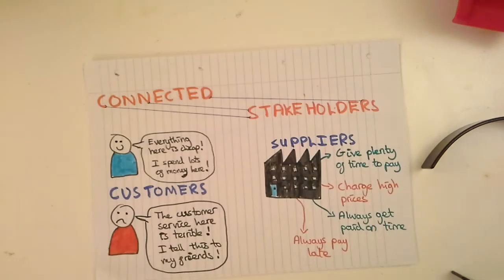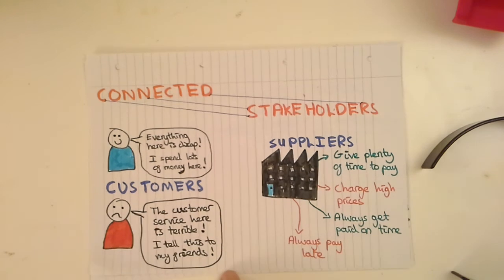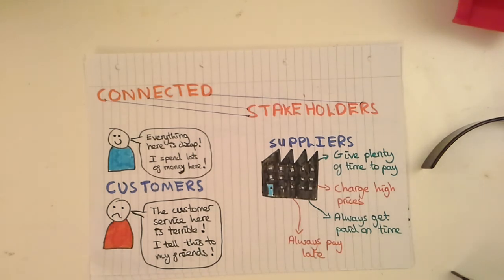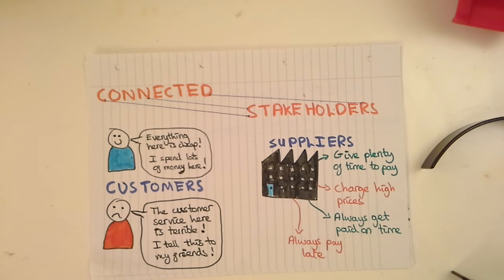Our last category are connected stakeholders. These are again external to the business, but they're in some way directly connected to it. Let's look at customers. Here we have our happy customer who's happy because all the products are cheap and good value for money. Because of this, he might spend a lot of his money there buying a lot of products, so obviously this is good for both the customer and the business.